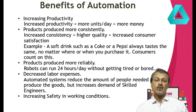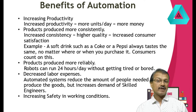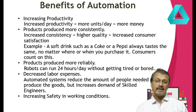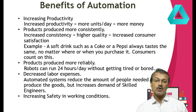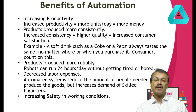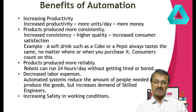Third, products produced more reliably. Robots can run for 24 hours a day without getting tired or bored. Humans may get bored doing the same thing repeatedly, resulting in slow work speed, which may result in changes in quality as well as quantity. Fourth point: decreased labor expenses. Less labor expense results in cutting the cost of the product too. Automated systems reduce the number of people needed to produce goods but increase the demand for skilled engineers. So automation is good for all engineers out there.